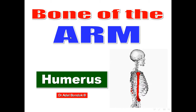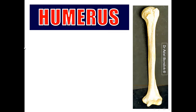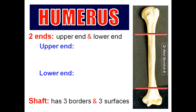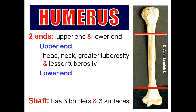The bone of the arm is the humerus. The humerus is a long bone, formed of two ends and a shaft. The upper end is formed of: the head, neck (anatomical and surgical), greater tuberosity, lesser tuberosity, and the bicipital groove between the two tuberosities. The head articulates with the glenoid cavity to form the shoulder joint, which is a ball-and-socket synovial joint. The anatomical neck is the constriction beyond the head; the surgical neck is below the two tuberosities and is liable to fracture.